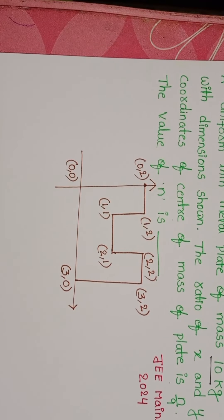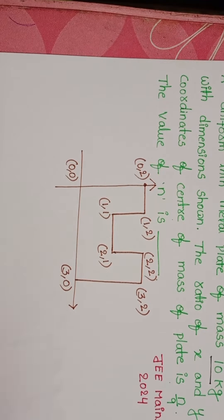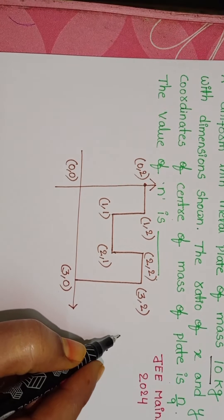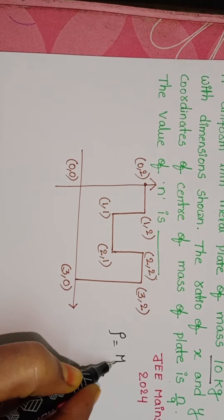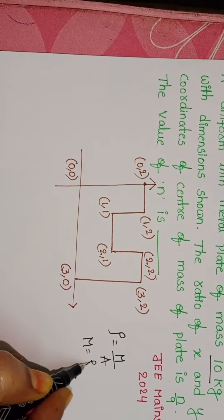This is the given diagram and this plate is a uniform metal plate. Mass is distributed uniformly throughout the plate. Uniform mass density equals mass by area. Mass equals rho into area.